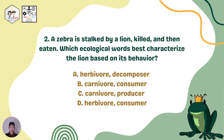Second question: A zebra is stalked by a lion, killed, and then eaten. Which ecological words best characterize the lion based on its behavior? A. Herbivore and decomposer. B. Carnivore and consumer. C. Carnivore and producer. Or letter D. Herbivore and consumer.